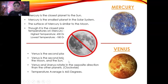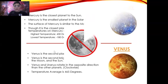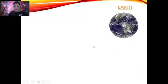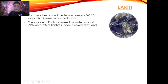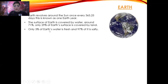Earth. Earth revolves around the sun once every 365.25 days. This is known as one Earth year. The surface of Earth is covered by water around 71%. Only 29% of Earth's surface is covered by land. Only 3% of Earth's water is fresh and 97% of it is salty. Earth has one moon rotating around it.